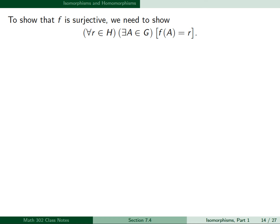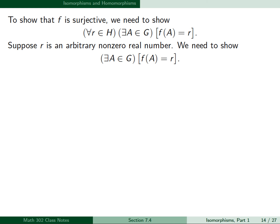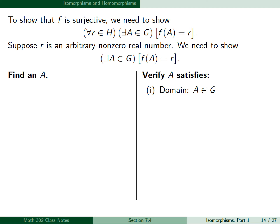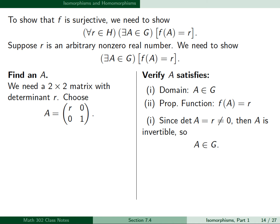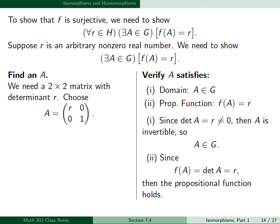To show f is surjective, we need to show that for all r in H, there exists a matrix A in G such that f(A) = r. Suppose r is an arbitrary non-zero real number. We can choose A to be the matrix [r 0; 0 1]. Since det(A) = r, which is non-zero, A is invertible and belongs to G. Since f(A) = det(A) = r, the propositional function holds, and therefore f is surjective.